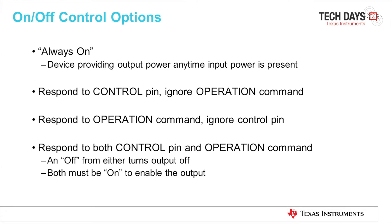PMBus has many on and off control options. One option is always on — as soon as power is present in the IC, the device will provide output power. Another option is to respond to the control pin of the PMBus, which is the PMBus enable pin, and ignore the operation command. Another option is to respond to the operation command but ignore the control pin. Finally, a fourth option is to respond to both the control pin and the operation command: an off from either of these commands turns the output off, but both must be on to enable the output.